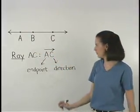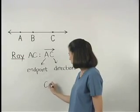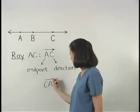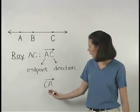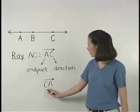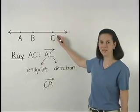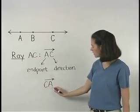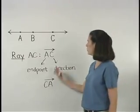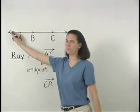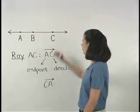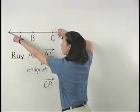So let's say we have CA with a little arrow over it. In this case, since the first letter is C, our endpoint would be at C. And since the second letter is A, the ray would go in the direction of point A. So ray CA is going to the left.